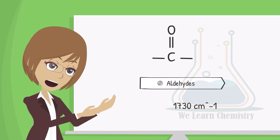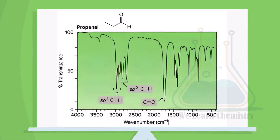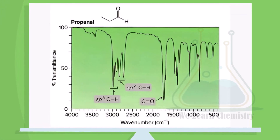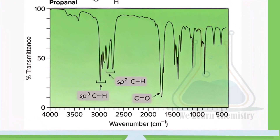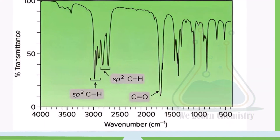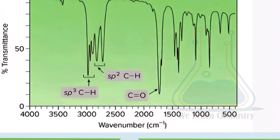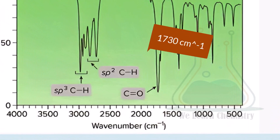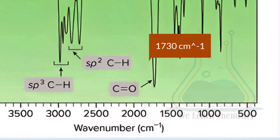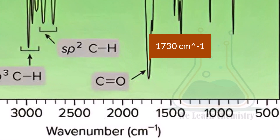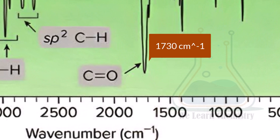Here we talk about the IR spectra of the carbonyl group in aldehydes. The most prominent peak in the IR spectra of an aldehyde is usually a strong, sharp band at 1730 per centimetre, corresponding to the carbonyl group stretching vibration.